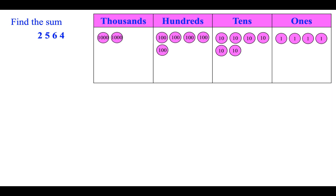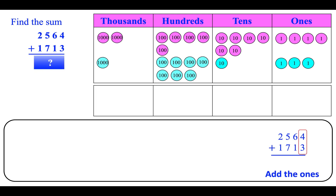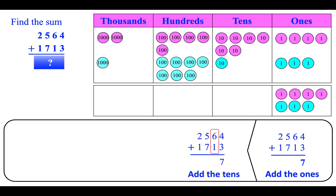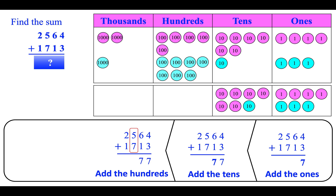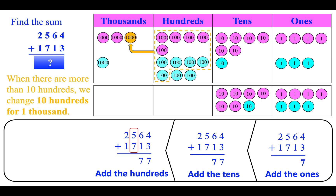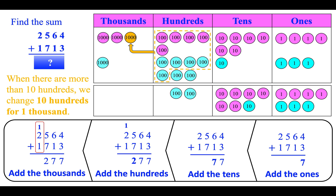Find the sum. Two thousand five hundred sixty-four plus one thousand seven hundred thirteen. First, we add the ones: four plus three is seven. Next, we add the tens: six plus one is seven. Then, we add the hundreds: five plus seven is twelve. When there are more than ten hundreds, we change ten hundreds for one thousand. We add one thousand to the thousands place. Now we are left with two. Then, we add the thousands: one plus two plus one is four.